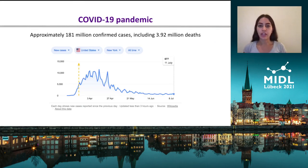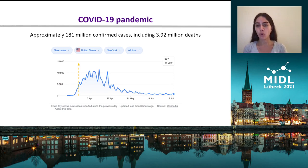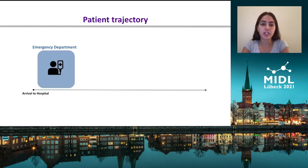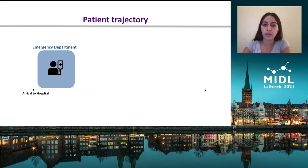As of yesterday, there are approximately 181 million confirmed COVID-19 cases, including 3.92 million deaths. This shows the first wave in New York, and we approximately started working on this project in mid to late March. Hospitals in particular have been severely affected by the pandemic. It has specifically strained resources globally, especially in the emergency department.